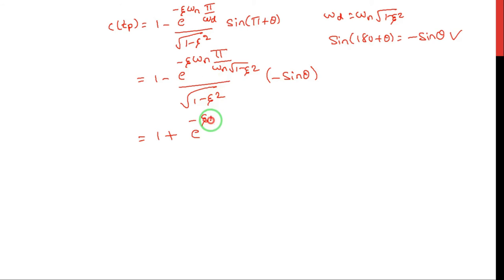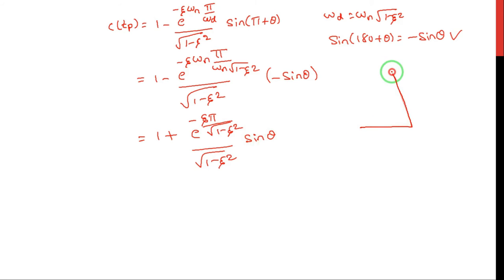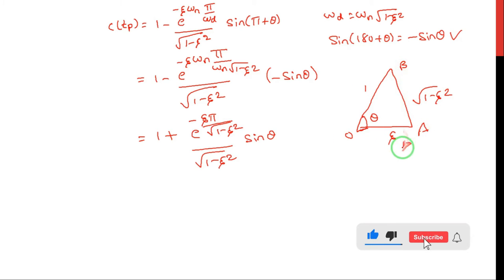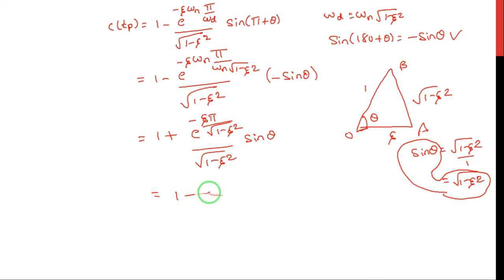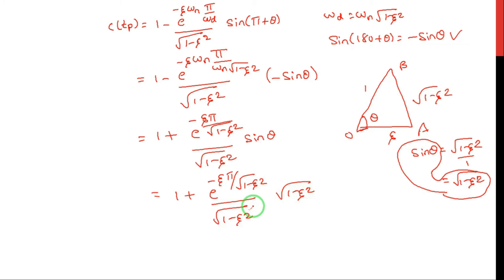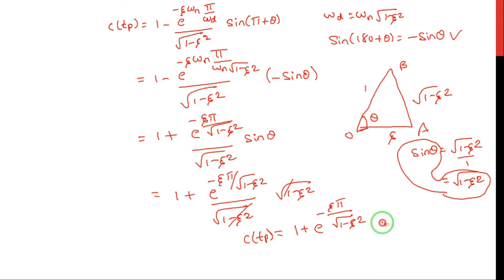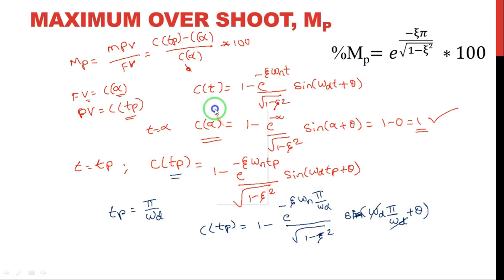From the reference right triangle, θ is defined such that sin θ = √(1−ζ²) / 1, so sin θ = √(1−ζ²). Substituting this into the expression: 1 + e^(−ζπ/√(1−ζ²)) / √(1−ζ²) · √(1−ζ²). The two √(1−ζ²) terms cancel, giving c(tp) = 1 + e^(−ζπ/√(1−ζ²)). We now have both expressions: c(tp) and c(∞).